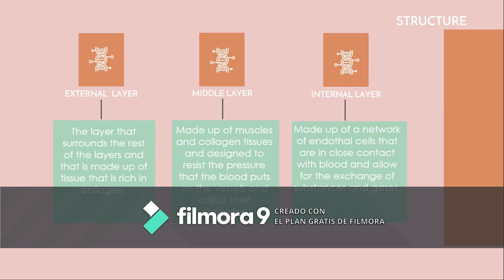The structure of blood vessels consists of three layers. First, the external layer, which surrounds the rest of the layers and is made up of tissue rich in collagen. Then the middle layer, made up of muscles and collagen tissue, designed to resist the pressure that blood puts on the vessels and adjust their diameter. At last, the internal layer, made up of a network of endothelial cells that are in close contact with blood and allow for the exchange of substances and gases.